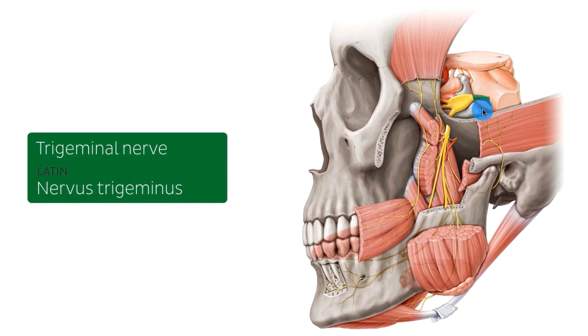This structure right here is highlighted in green. As you can probably remember from our previous tutorials, this is a mixed nerve, meaning that it carries both motor and sensory fibers.